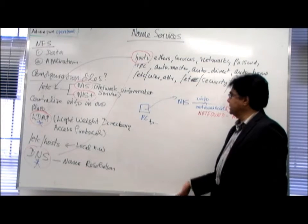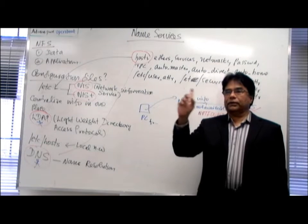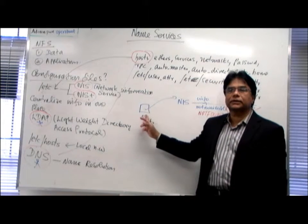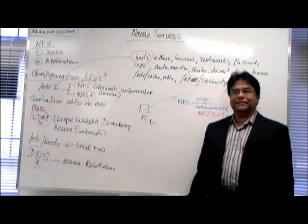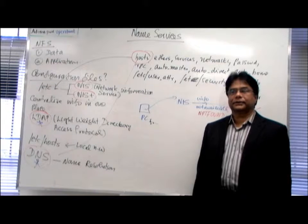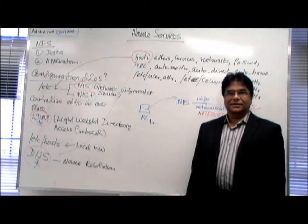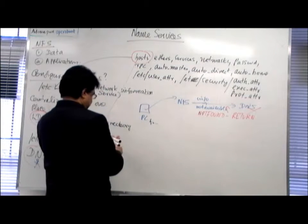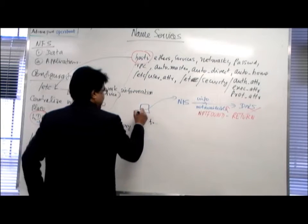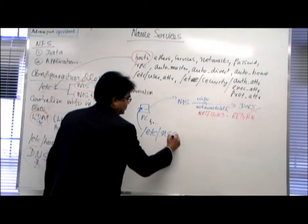So how will I tell this PC to try your local files first, and if not there, go to DNS or NIS? With the help of a configuration file. There is a configuration file for that in the ETC directory. That configuration file is called ETC NSSwitch — name service switch.